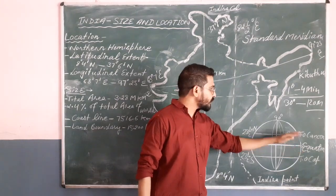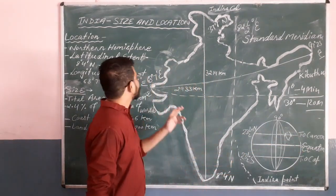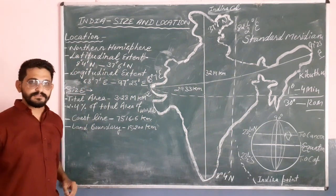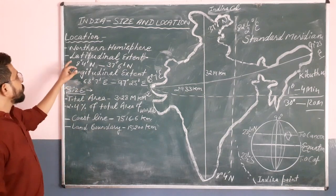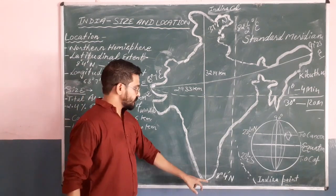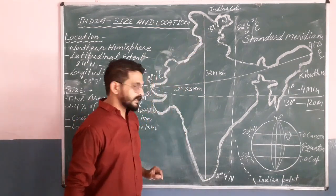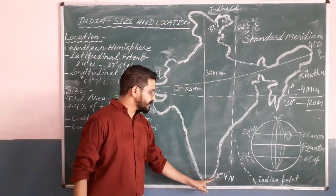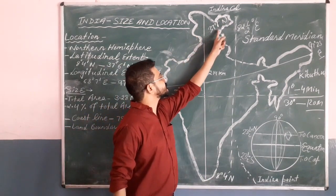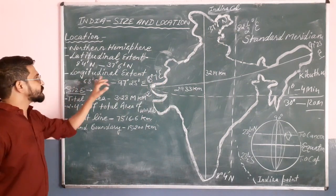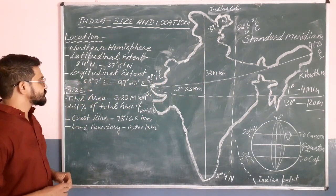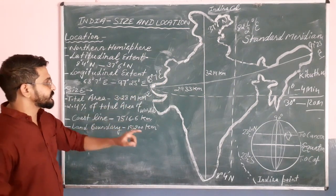Now let's talk about the location of India. India lies in the northern hemisphere as we discussed. The latitudinal extent of India is from 8 degrees 4 minutes north to 37 degrees 6 minutes north. And the longitudinal extent of India is 68 degrees 7 minutes east to 97 degrees 25 minutes east.